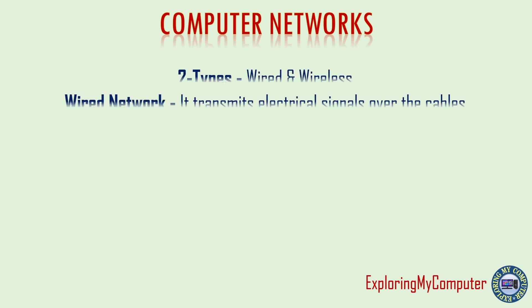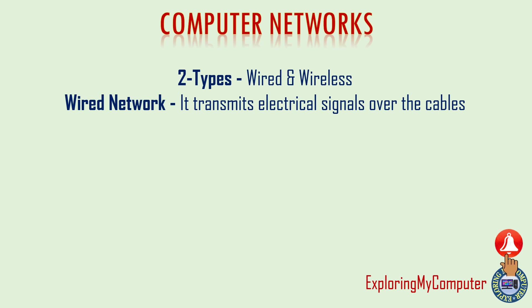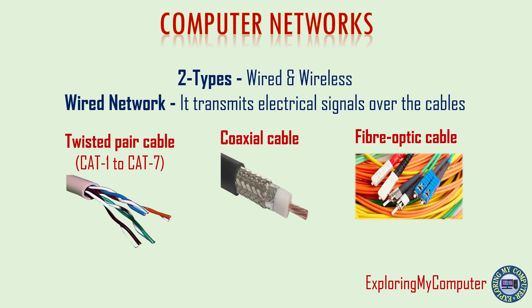Network media: two types — wired and wireless. Wired network transmits electrical signals over cables. Three types of cables: twisted pair cable (Category 1 to Category 7), coaxial cable, and fiber optic cable.